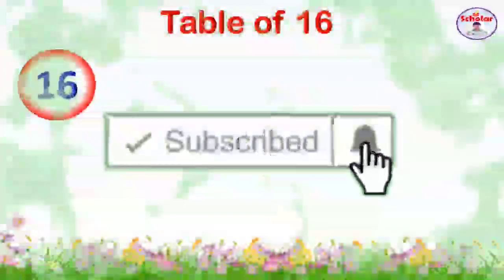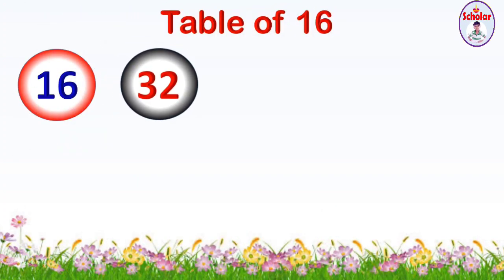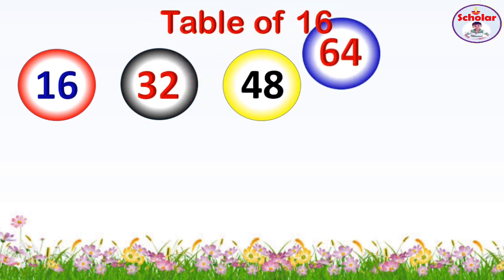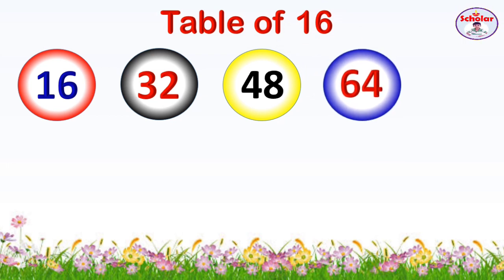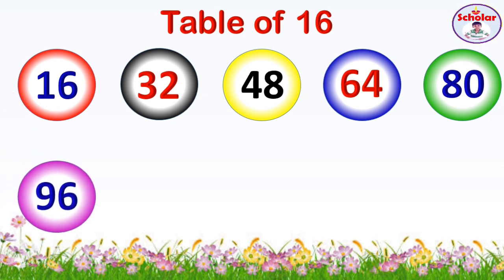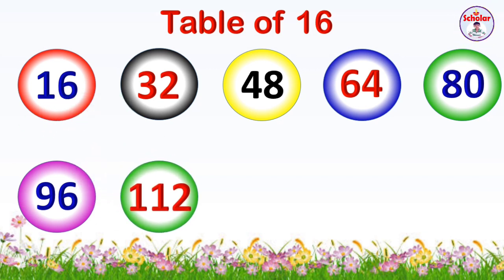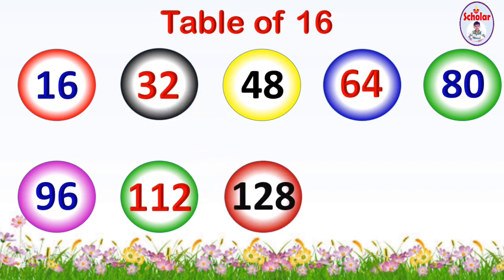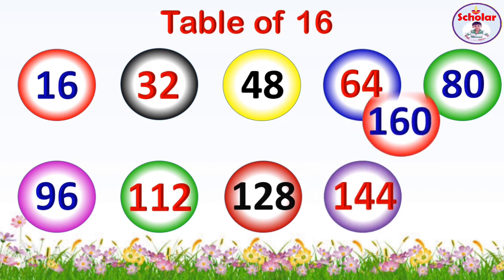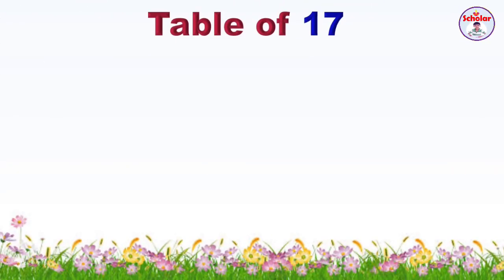Table of 16: 16×1=16, 16×2=32, 16×3=48, 16×4=64, 16×5=80, 16×6=96, 16×7=112, 16×8=128, 16×9=144, 16×10=160.